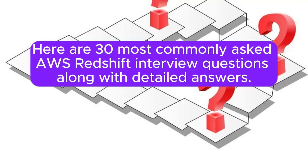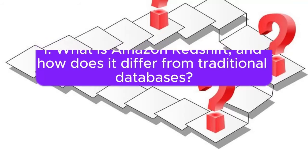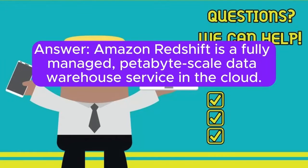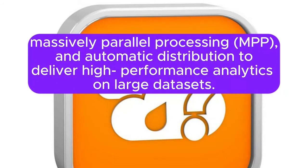Here are the 30 most commonly asked AWS Redshift interview questions, along with detailed answers. Question 1: What is Amazon Redshift, and how does it differ from traditional databases? Answer: Amazon Redshift is a fully managed, petabyte-scale data warehouse service in the cloud. It differs from traditional databases by using a columnar storage format, massively parallel processing (MPP), and automatic distribution to deliver high-performance analytics on large datasets.